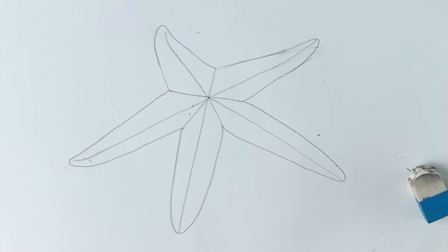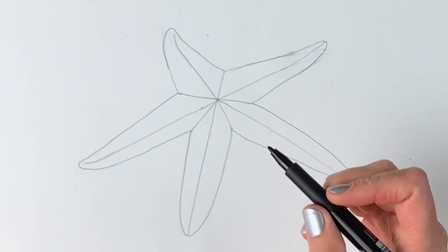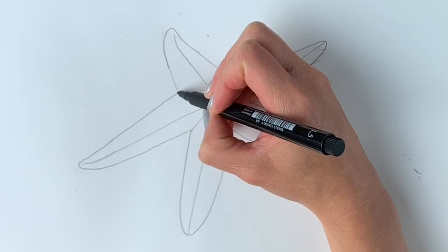Okay, you can carry on in pencil but I'm going to continue in pen just so you can see it more clearly. We're going to do the outline of the starfish. So just using tiny little bumps. Can you see what I mean?